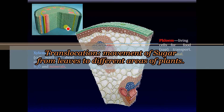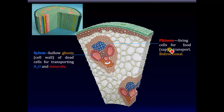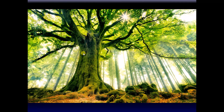Let's review before we finish. In this model of a stem, the large hollow elements are the xylem — ghost cell walls of dead cells for transporting water and minerals. On the outside are the phloem elements — living cells for food or sap transport, with bidirectional traffic, whereas xylem traffic is unidirectional. That concludes our brief survey of the vascular system of plants. Next time, we shall build on this.